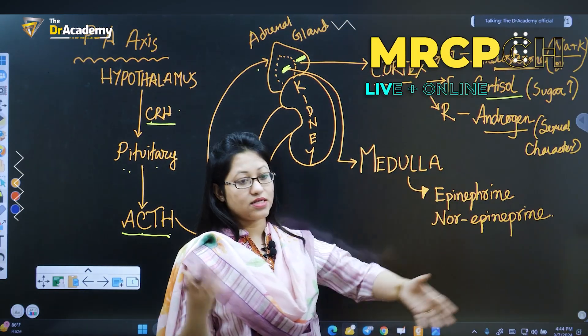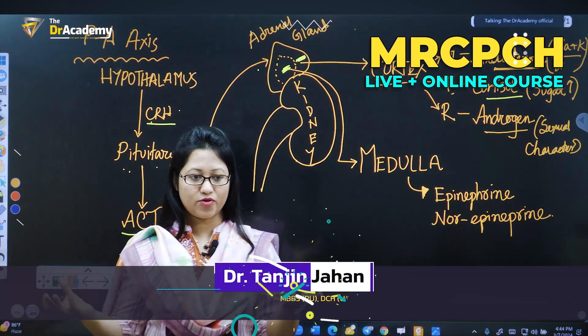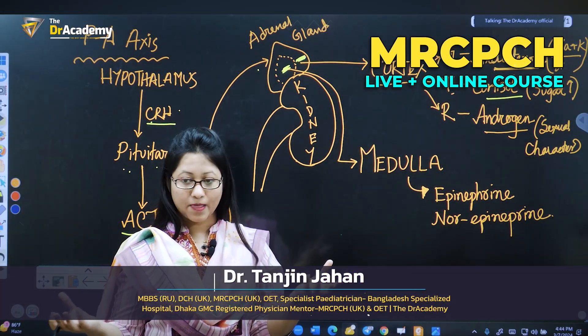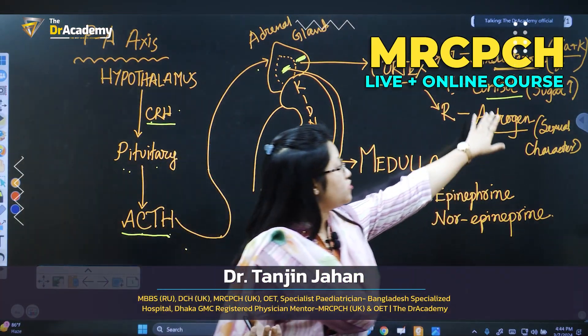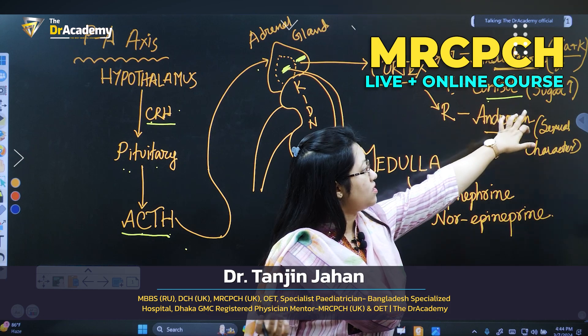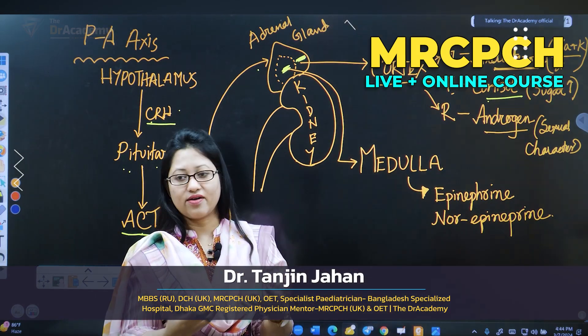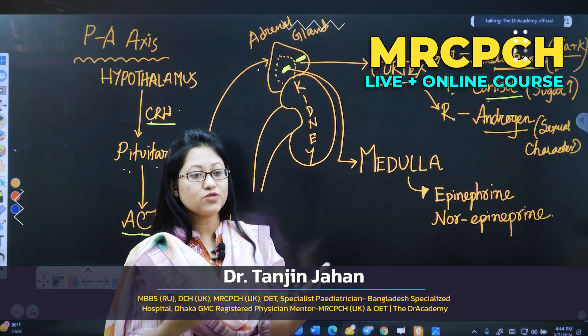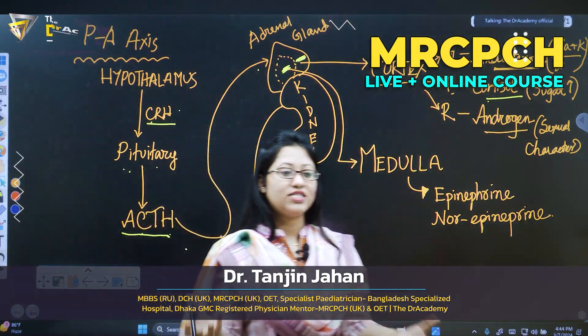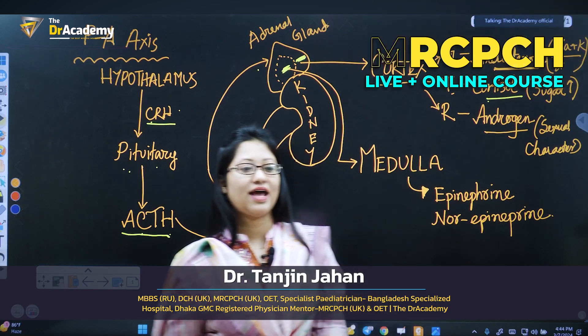Cortisol maintains the sugar level of your body. Usually, cortisol causes the sugar level to be higher in your body. That is why whenever a child is getting steroid from outside, they can have a chance of diabetes mellitus.